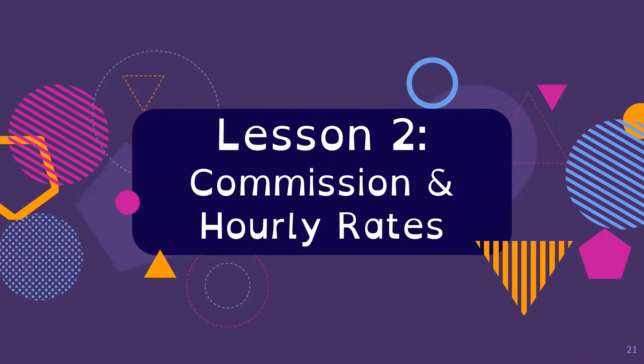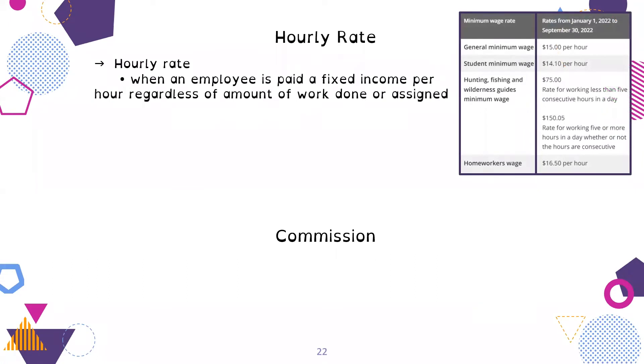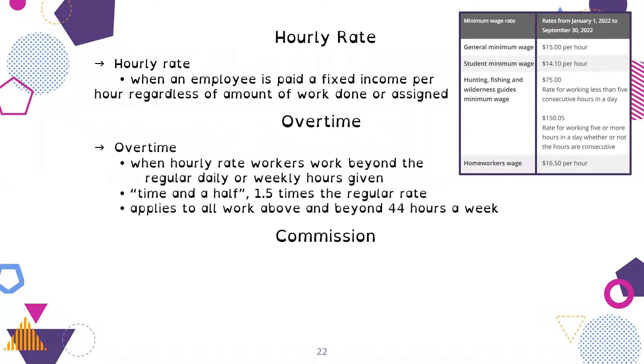Lesson two, commission and hourly rates. An hourly rate is when an employee is paid based on a fixed income per hour, regardless of the amount of work done. You always just get paid a certain amount for the time that you spend. In Ontario, we now have a general minimum wage that is $15 per hour. For students it is $14.10 per hour.